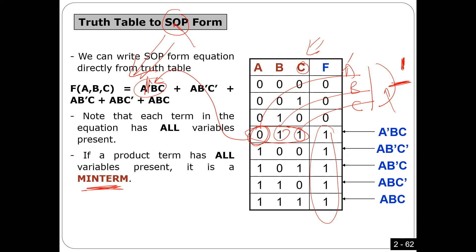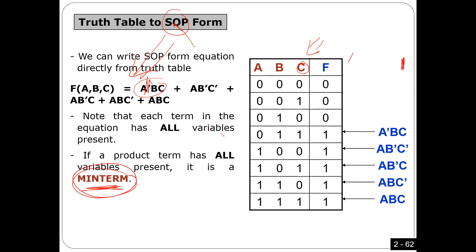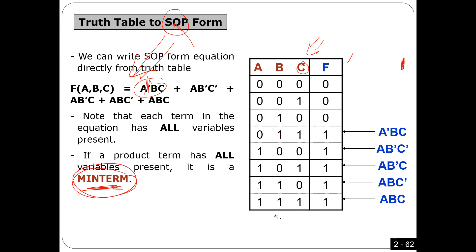You should understand what I mean by min terms. Min terms means the rows where we have ones. For example, this is row zero, row one, two, three, four, five, six, seven. The min terms here are from row three until row seven. One way to define a function is just by the min terms. To define a function, I can give you the truth table, or I can give you the min terms. When I do something like that, this is enough to define a function — the function has zero everywhere except one for certain rows.